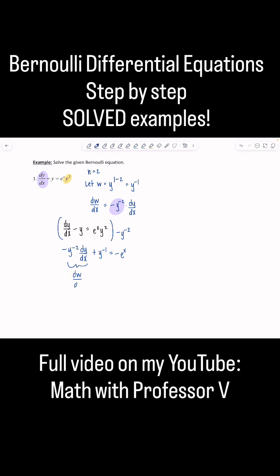So now, this is perfect: this is dw/dx plus—I don't want to write y to the negative first anymore, I want this to be linear in w. Y to the negative first is w, so we have dw/dx plus w equals negative e to the x. Perfect.